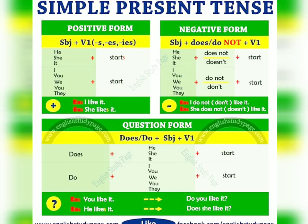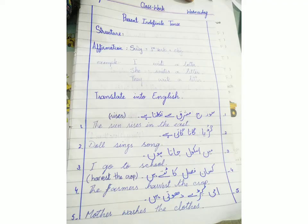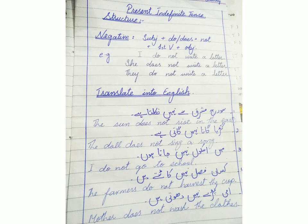There were exercises given to translate sentences from Urdu to English. Affirmative examples: 'The sun rises in the east.' 'The doll sings the song.' 'I go to school.' 'The farmers harvest the crop.' 'Mother washes the clothes.' Then the same sentences are made negative by adding 'does not' for singular subjects and 'do not' for plural subjects.